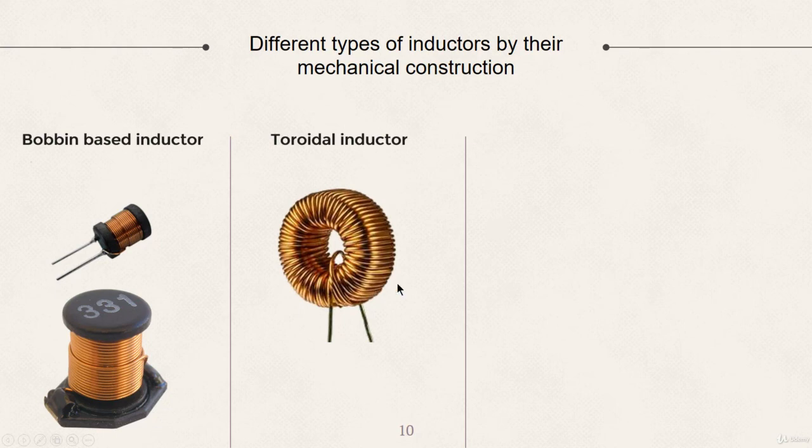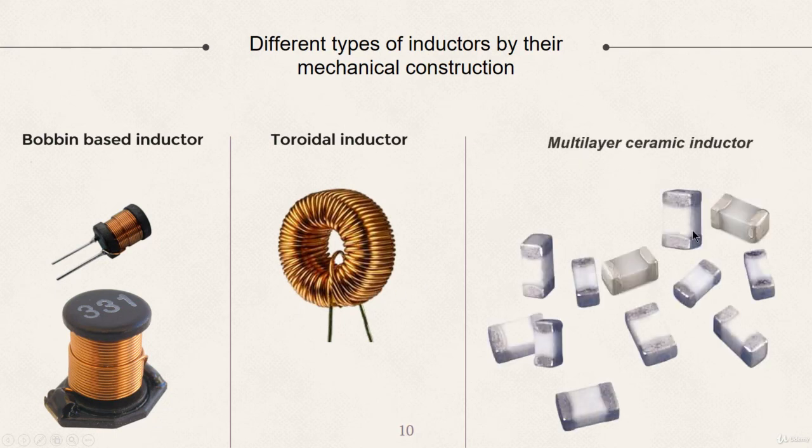The last type that we are going to talk about is the multi-layer ceramic inductor. This type of inductor is widely used for surface mount technology. The inductor is manufactured within a ferrite or, more commonly, a magnetic ceramic material. These are mainly used in mobile communication systems and noise suppression applications.